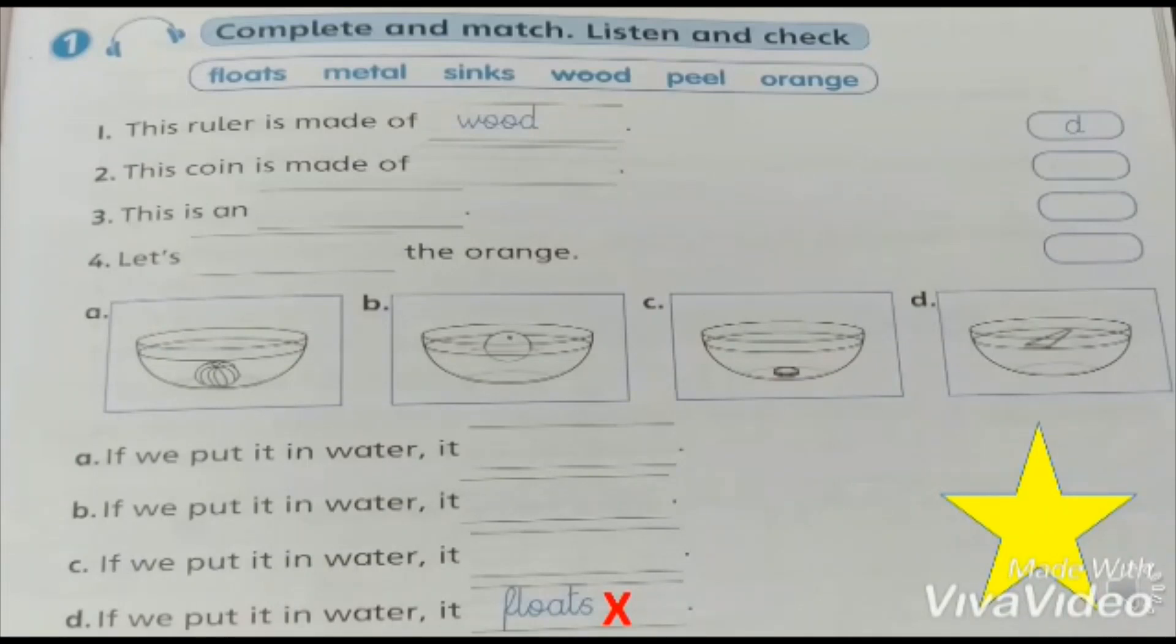Exercise number one. One, this ruler is made of what? Wood. Which is picture number D. If we put it in water, it floats. Excellent.